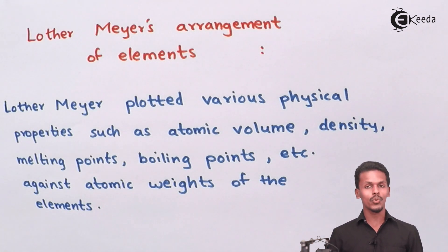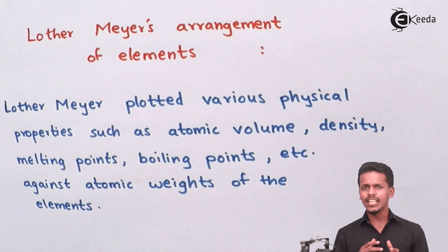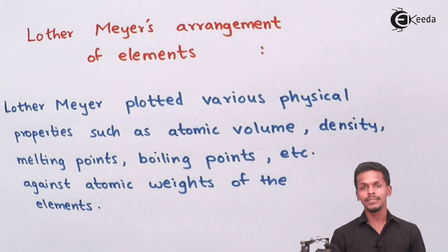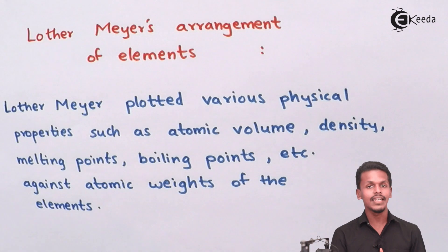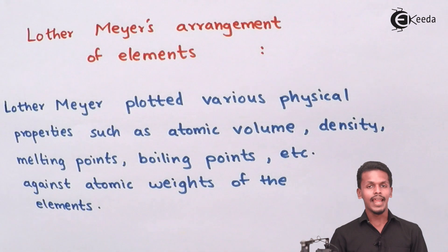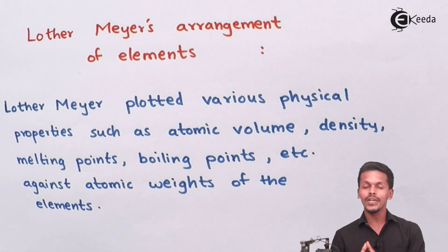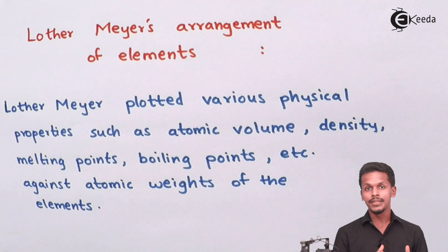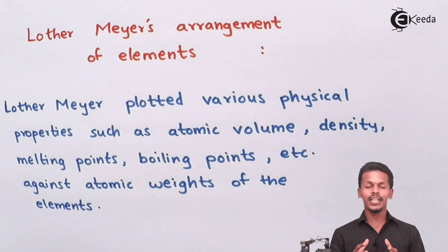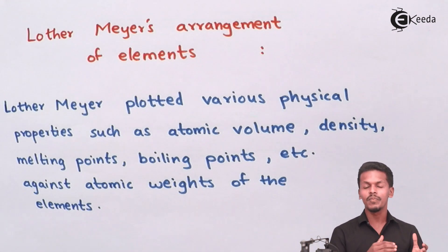In the previous lecture we learned that Döbereiner arranged elements in triads, where the middle element had an average atomic mass compared to the first and third. Cooke arranged elements in a homologous pattern, and Newlands' Octaves showed that the first element had the same properties as the eighth element.